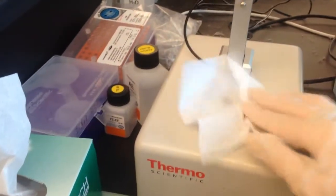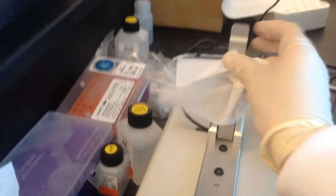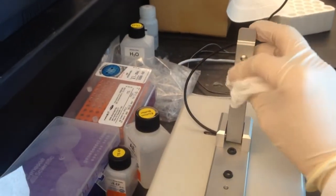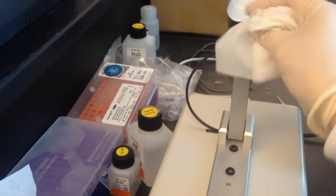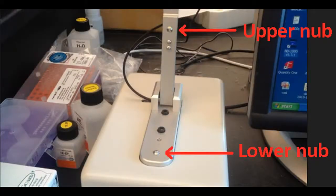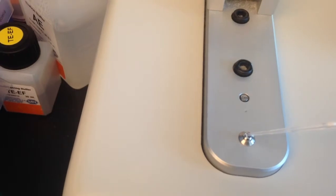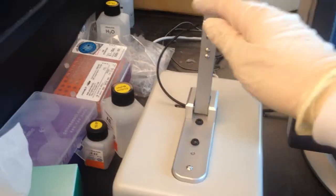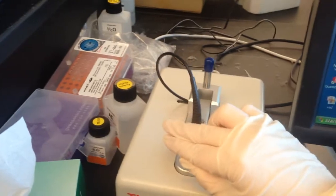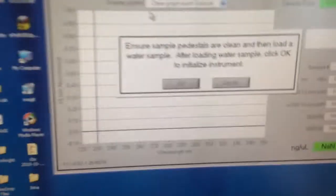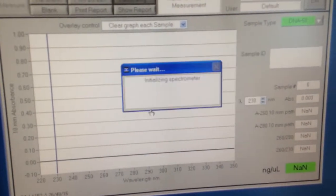Start by wiping down both the upper and lower pedestals with a Kimwipe. If you have no idea what I'm talking about when I say pedestals, it's these nubs. Load between 1 to 2 microliters of DI water. Lower the sampling arm so that the two nubs touch, and click OK on the machine to initialize.